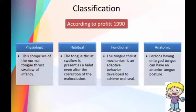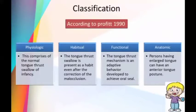Starting with the classification, according to Proffit in 1990, tongue thrusting is divided into four groups: physiologic, habitual, functional, and anatomic. Physiologic tongue thrusting is the tongue thrusting swallow of infancy. The habitual type persists as a habit even after correction of malocclusion. The functional type is an adaptive behavior developed to achieve oral seal. The anatomic type is seen in persons with an enlarged tongue that leads to an anterior tongue posture.